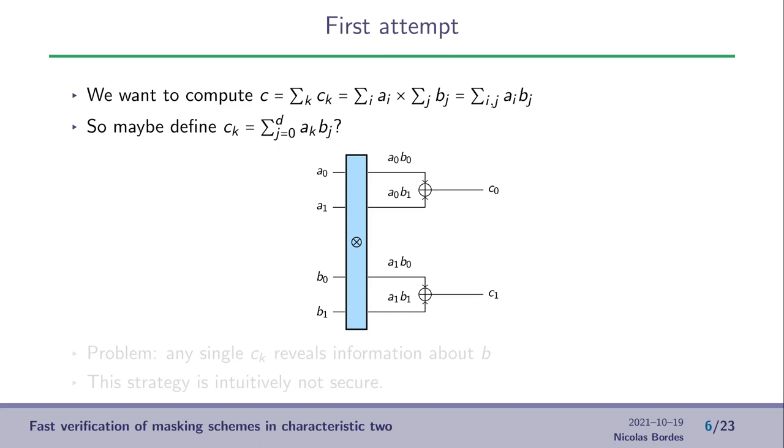So here is the first attempt at doing so for the multiplication. We define CK as the sum of all the A, K, B, J for all J. Here is the corresponding circuit for D equals 1. The problem here is that any single CK is actually revealing information about B.